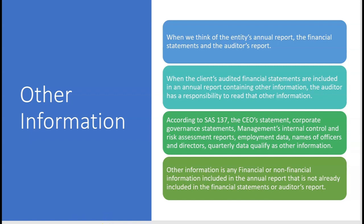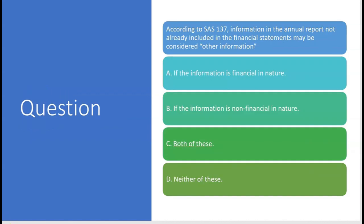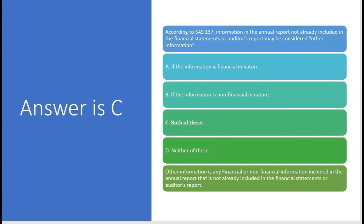The exam will ask you what's included as other information according to SAS 137. Here's that kind of question: 'According to SAS 137, information in the annual report not already included in the financial statements may be considered other information — A, if the information is financial in nature; B, if the information is non-financial in nature; C, both; D, neither.' The answer is C, both. Because other information is any financial or non-financial information included in the annual report that is not already included in the financial statements or the auditor's report.